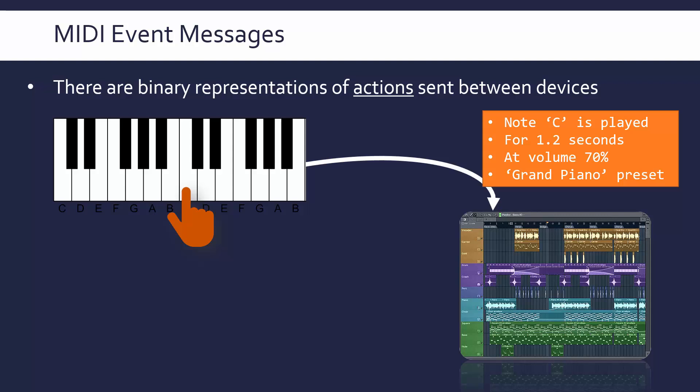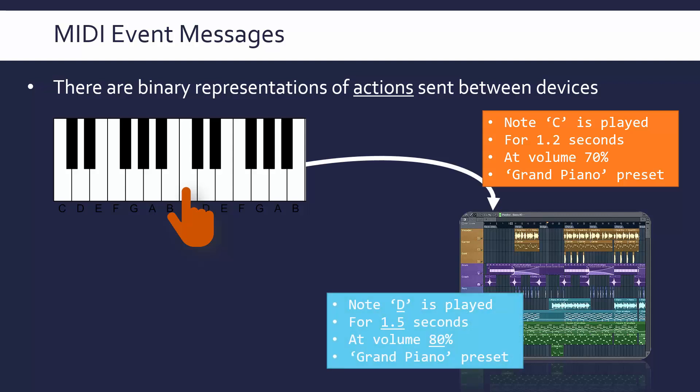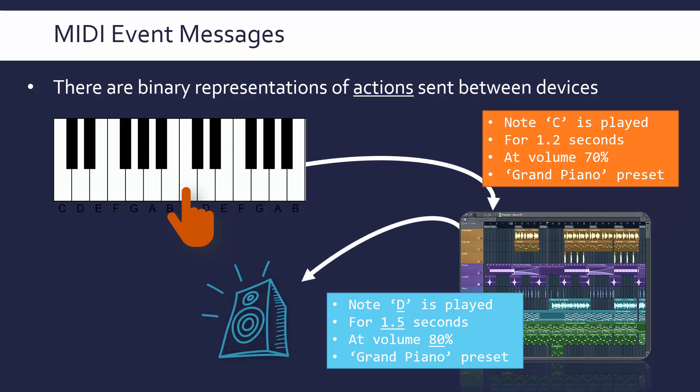In the software, the producer is able to play that sound whenever they want and also edit it. Because MIDI records the actions rather than the actual sound itself, the editor is able to change the C note into a D note, lengthen the sound, increase the volume, or change the preset. When it's played back from the computer, another event message is sent to a speaker, and the speaker plays out that sound.